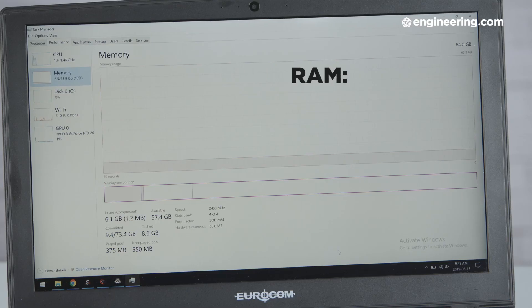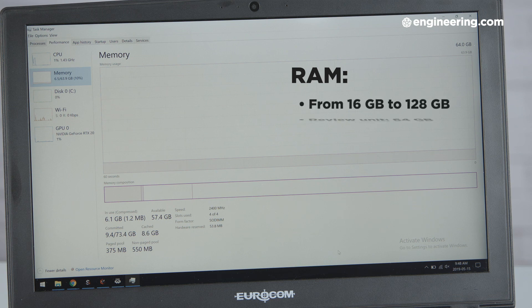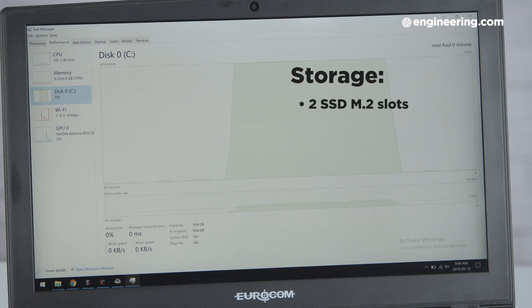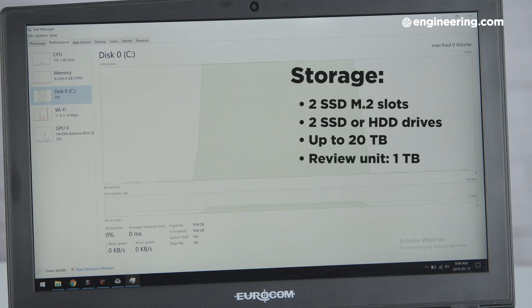Memory on the Sky X4C can go from 16 to 128GB, which is higher than many, but not all, mobile workstations. The storage capabilities, however, are through the roof, and with two SSD M.2 slots and two SSD or HDD drives, you can cram up to 20TB of SSD storage on the Sky X4C. That's a lot of bytes.